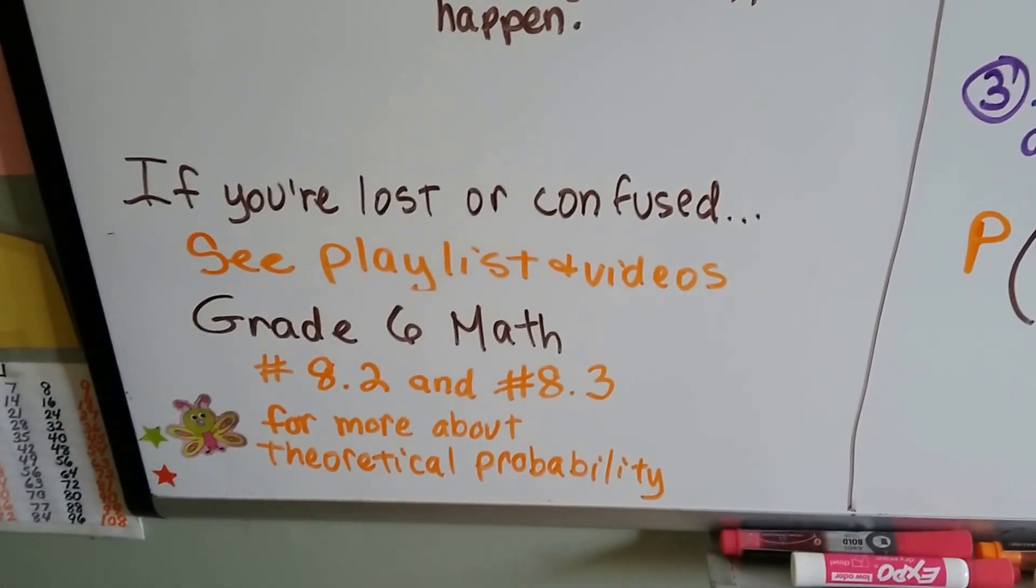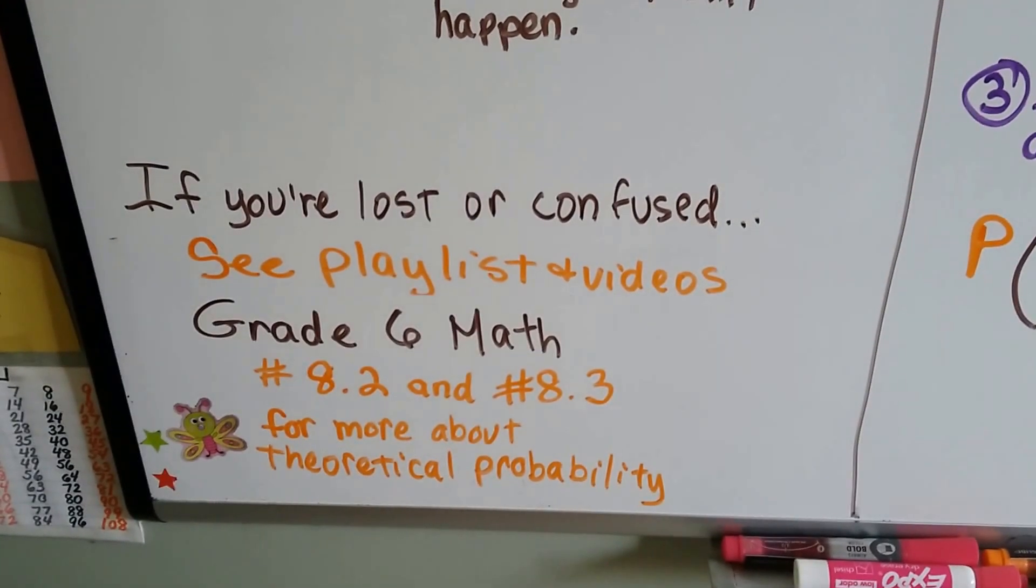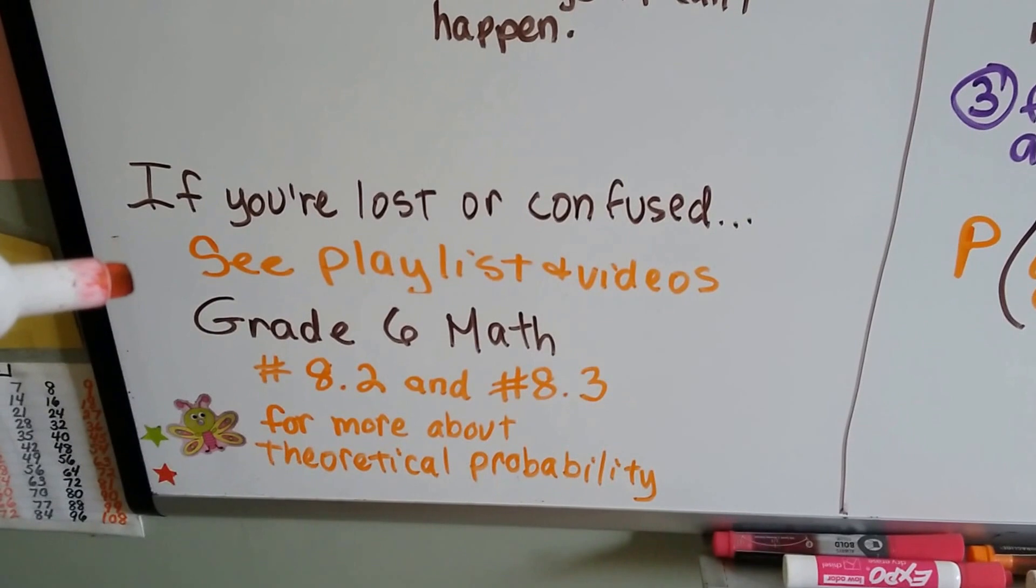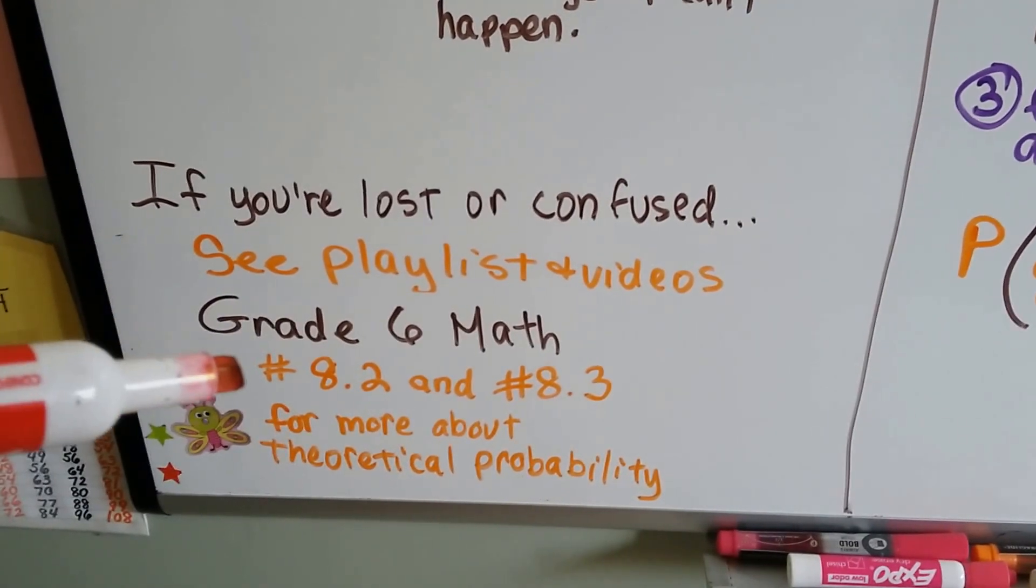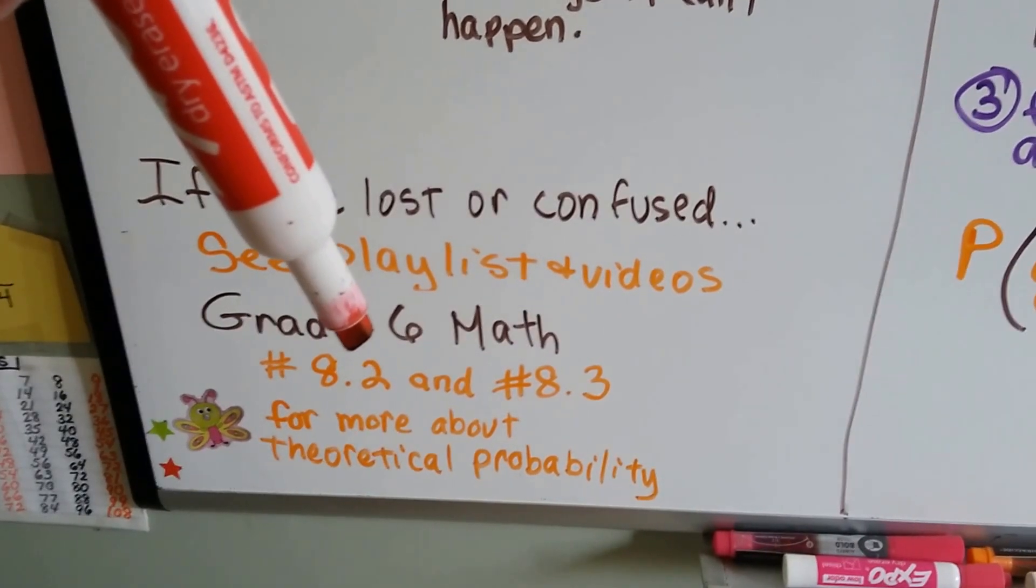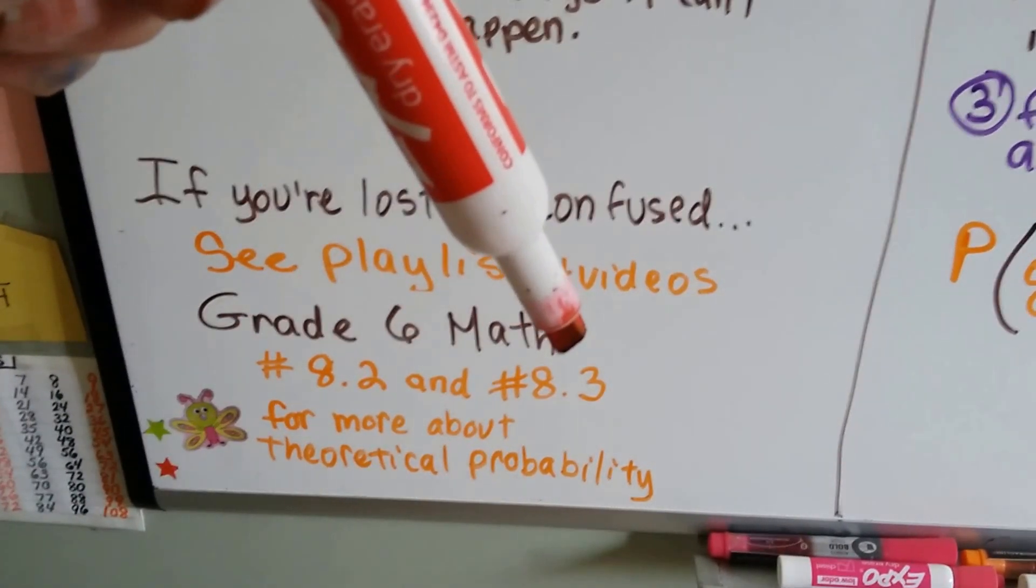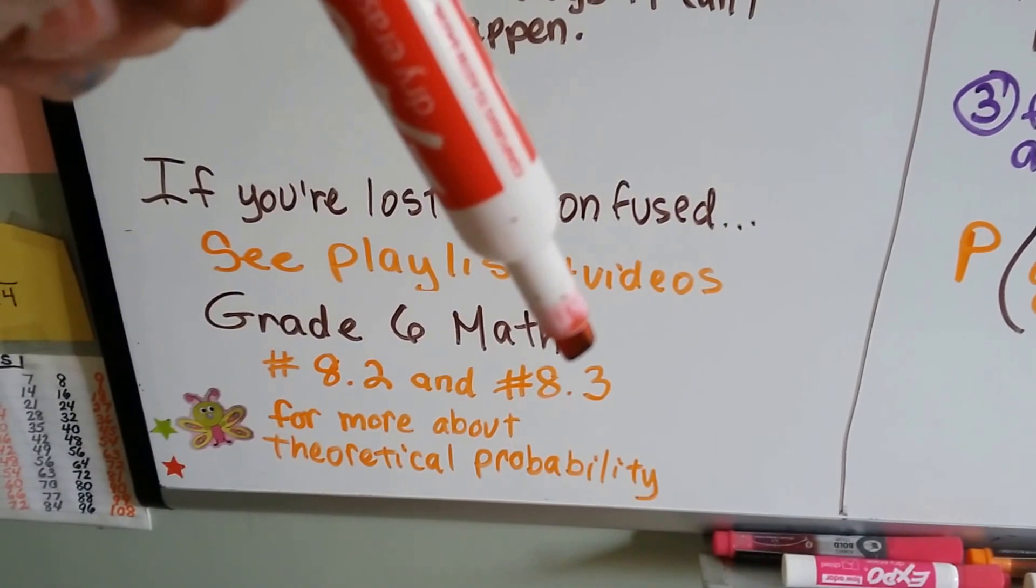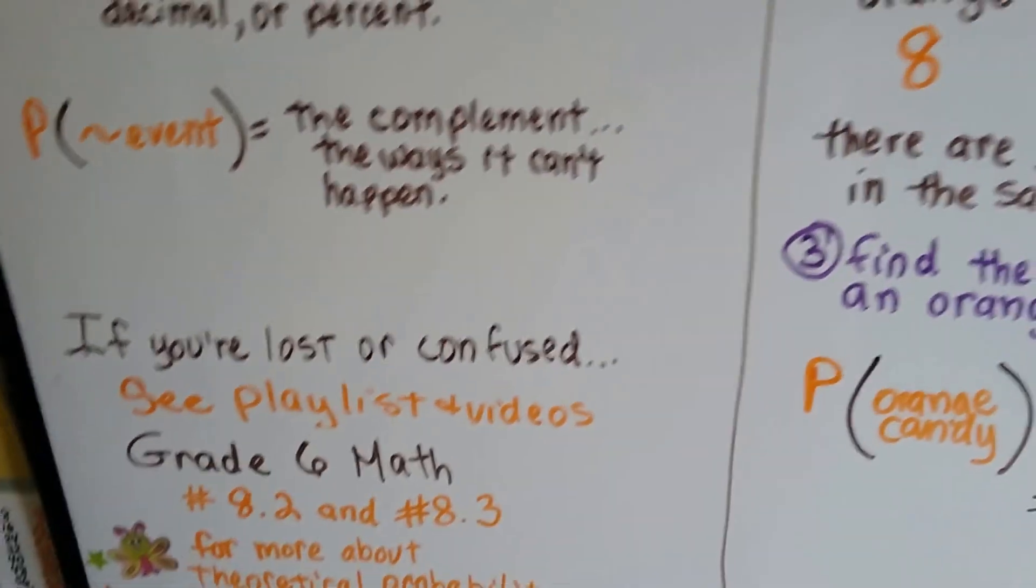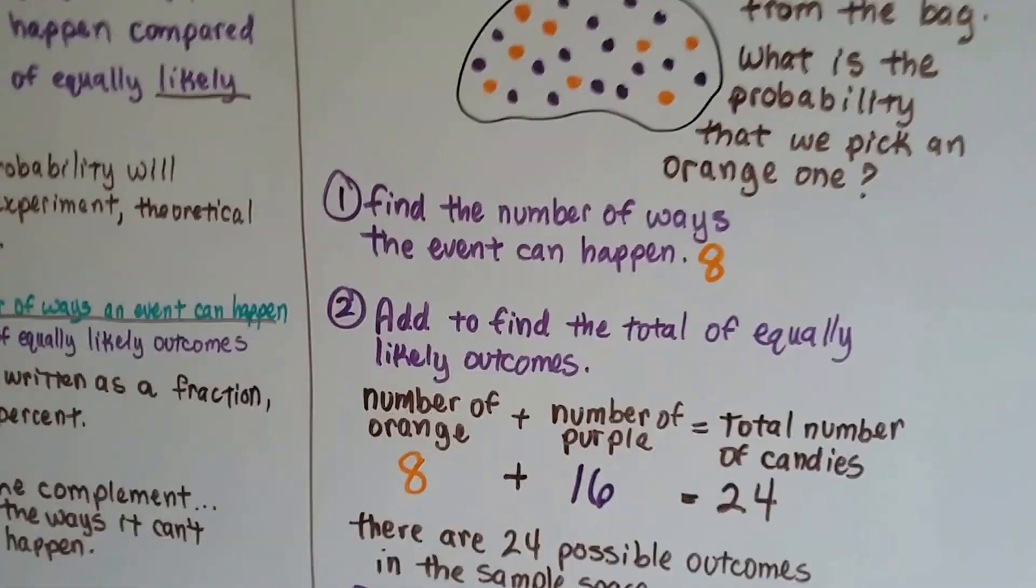If you're lost or confused right now, and these words are way past you, you need to go back to see the playlist and videos in grade 6 math, see number 8.2 and 8.3. This explains theoretical probability, and this one compares theoretical probability to experimental probability. That'll explain a lot more, and then you can come back and watch this one, and maybe it'll make a little more sense.